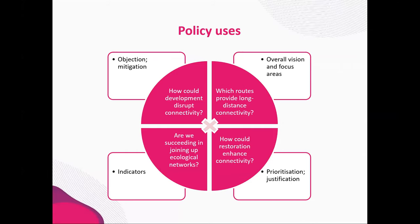To highlight some of the areas of policy where Condatus might be useful: you could look at where development might happen and the impact on connectivity, then use that information to raise an objection or suggest mitigation. Conversely, you might look at how restoration might enhance connectivity, talk about the prioritisation of that restoration, and make a case for funding. You could also look at which routes provide long-distance connectivity through your landscape as part of an overall vision, helping focus on certain areas without doing any prioritisation. Jenny's also looking at a more strategic, high-level use for Condatus asking whether we are succeeding in joining up ecological networks, where Condatus might be used as an indicator of network resilience.